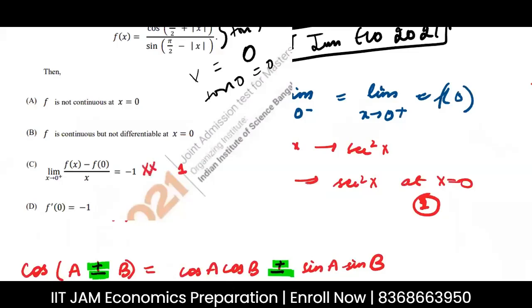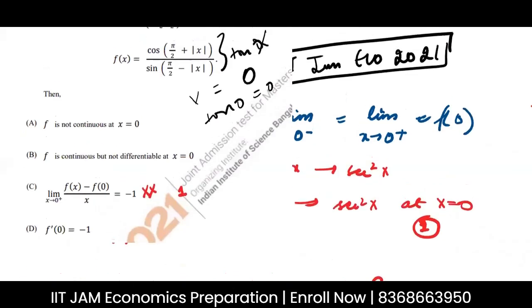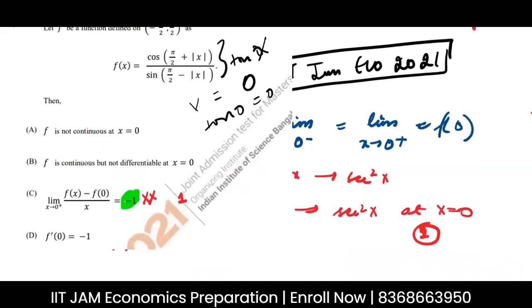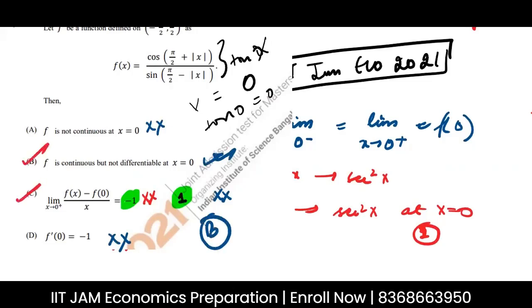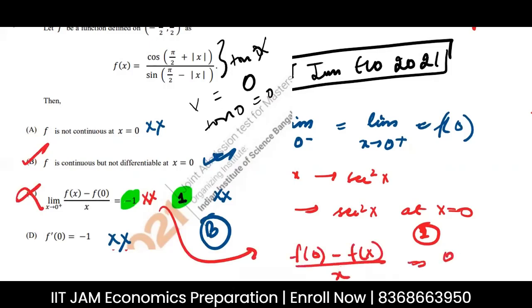So the limit equals 1, not −1, meaning that option C is incorrect. The answer key says B and C, but C is wrong. Had the expression been [f(0) − f(x)] / x, then the limit would have been −1. But [f(x) − f(0)] / x tends to 1, not −1. Therefore the only correct answer is B.